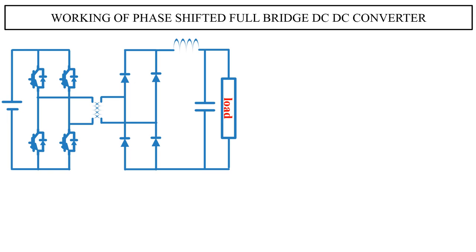This is the basic structure of a full bridge DC-DC converter. We have a DC voltage source at the input. These are the power electronic switches, which can be either MOSFET or IGBT.